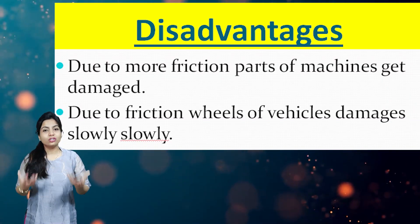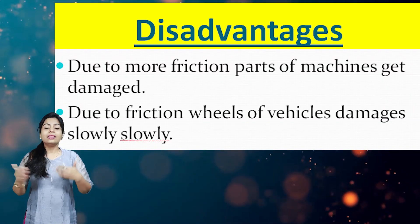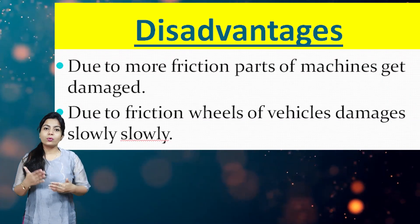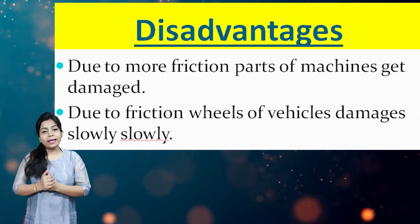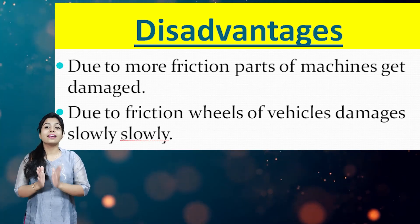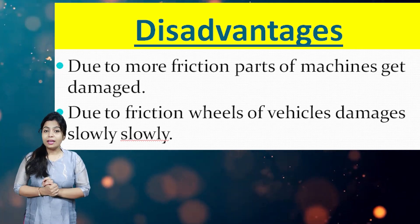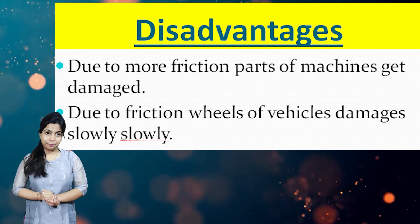We all know that in this universe when something has advantages, it also has disadvantages. Friction also has disadvantages. For example, in machines, when there is more friction, the machine parts get damaged and it slows down their working.